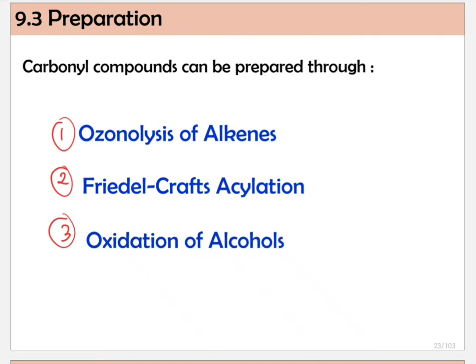For ozonolysis of alkene, you already learned this in the chapter on alkene. Friedel-Crafts acylation was covered in the chapter on benzene and its derivatives. For oxidation of alcohol, you already learned it in the chapter on hydroxy compounds. So all three reactions are actually a recap of what we have already learned before, so the reactions should not be unfamiliar to you.